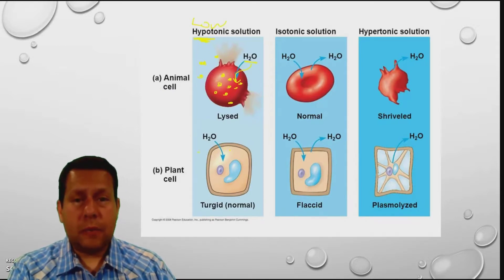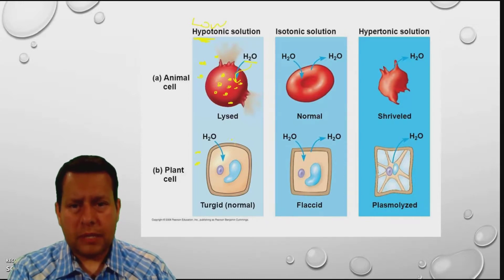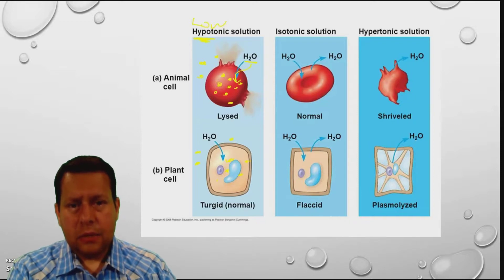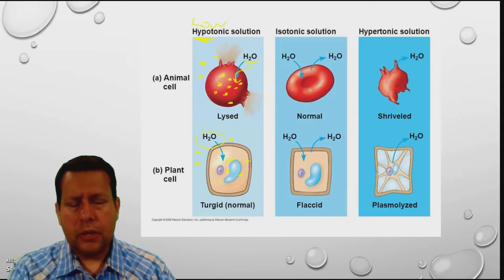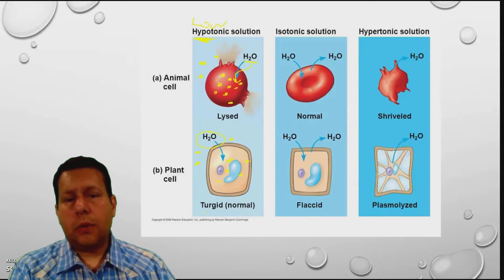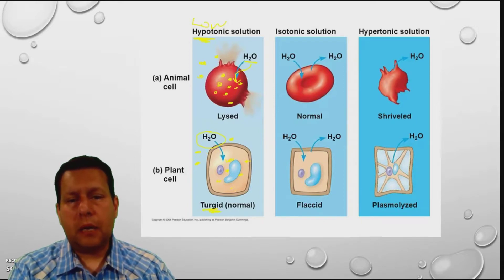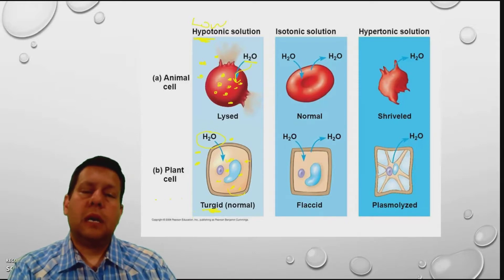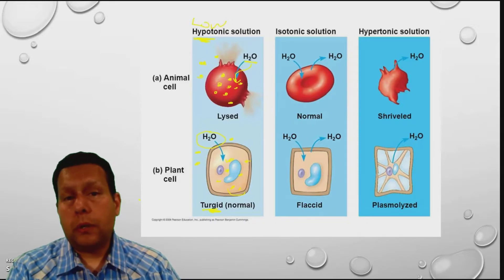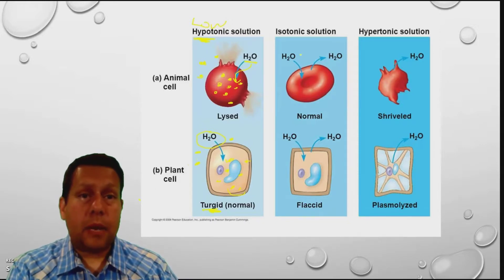Plant cells in a hypotonic solution work the same way. There's a low amount of solute outside and a high amount inside. The water is going to rush in and that cell is going to reach turgor pressure. Plants love this — it's a very happy plant cell because that gives them the support they need to stand upright.